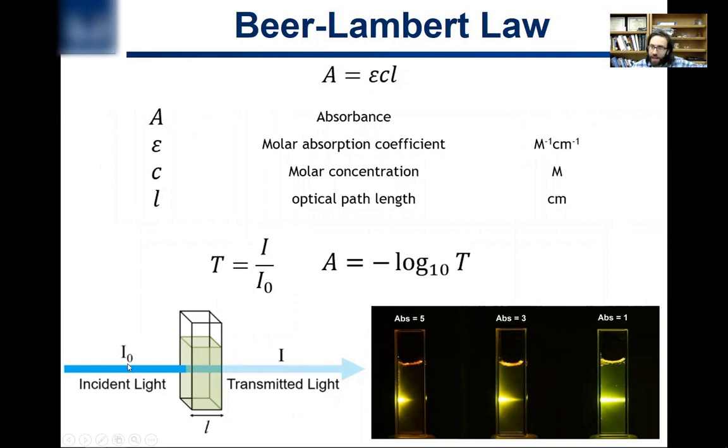So if you only have half of the light detected as what you started with, your transmission would be 50%, 0.5. The absorbance is just taking the negative log of that.